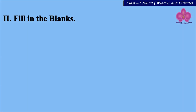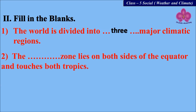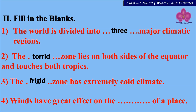Next question: fill in the blanks. Number one: the world is divided into dash major climatic regions. Number two: the dash zone lies on both sides of the equator and touches both tropics. Number three: the answer is frigid zone.